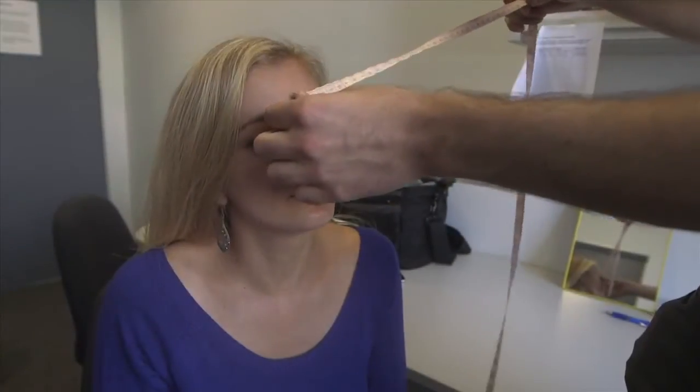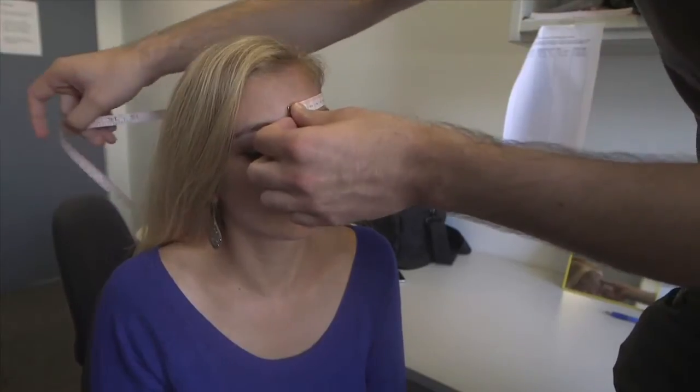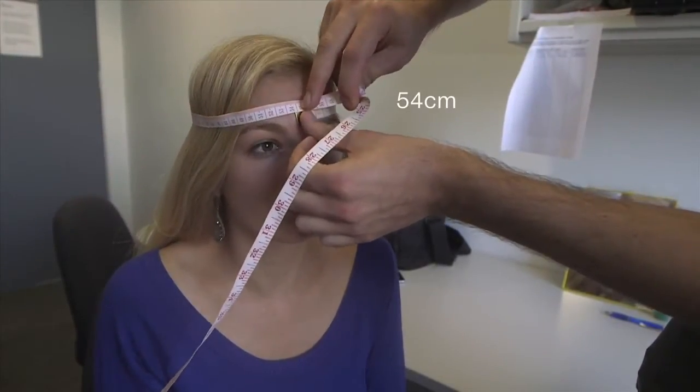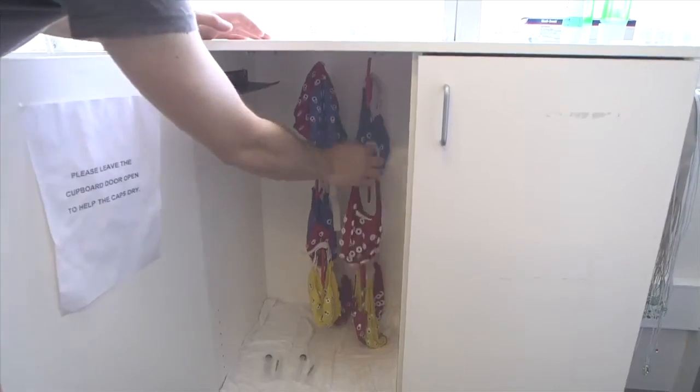The first step is to measure your participant's head. Start measuring from the center of the forehead and make sure you measure the part of the head with the wider circumference. This measurement will dictate what size cap the participant requires.